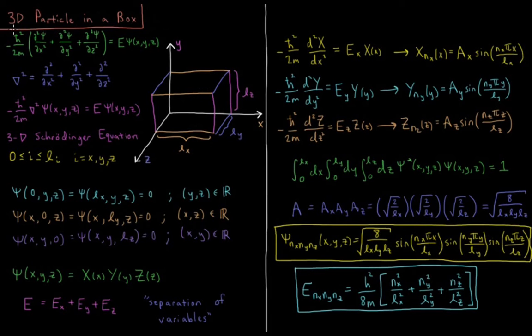So we have minus h-bar squared over 2m, our Hamiltonian operator, but now instead of first derivative with respect to x being our kinetic energy operator acting on the wave function, we have second partial derivative with respect to x plus second partial derivative with respect to y plus second partial derivative with respect to z, all of those acting on the wave function equals the total energy times the wave function.